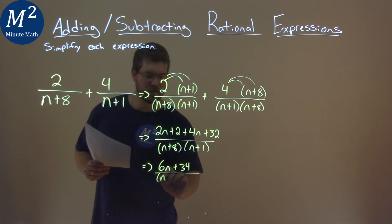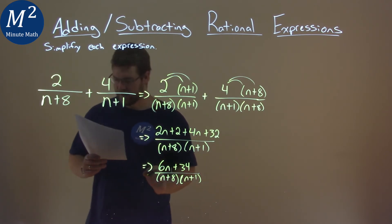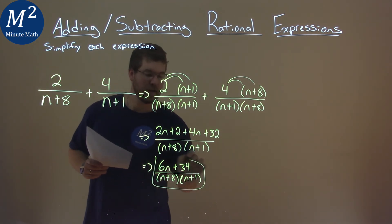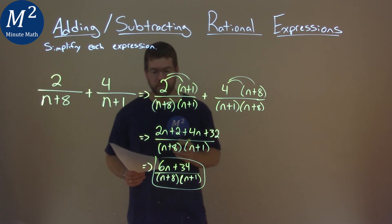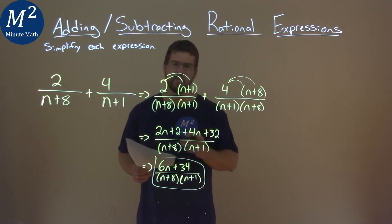Our denominator stays the same: n plus 8 and n plus 1 being multiplied. And that's actually it. We can't simplify it anymore. So our final answer here is 6n plus 34 over n plus 8 times n plus 1.